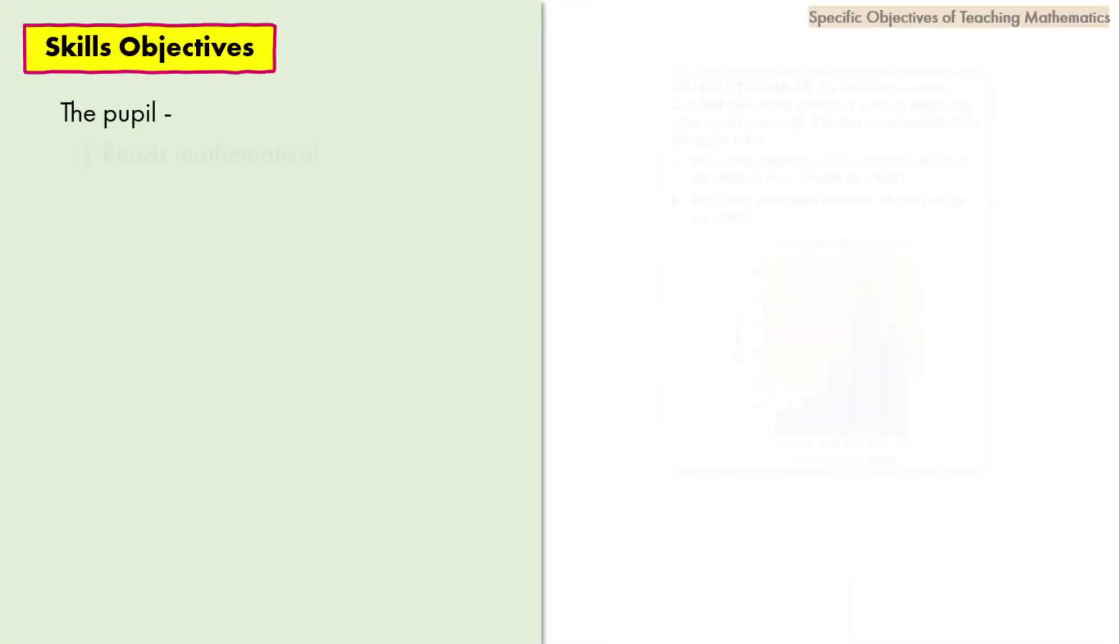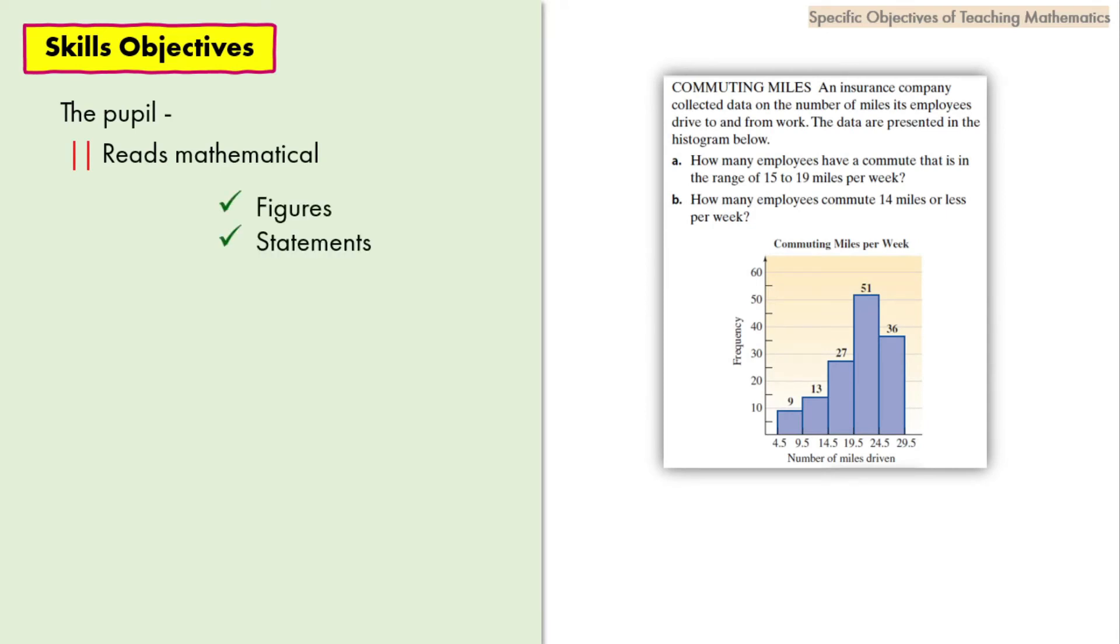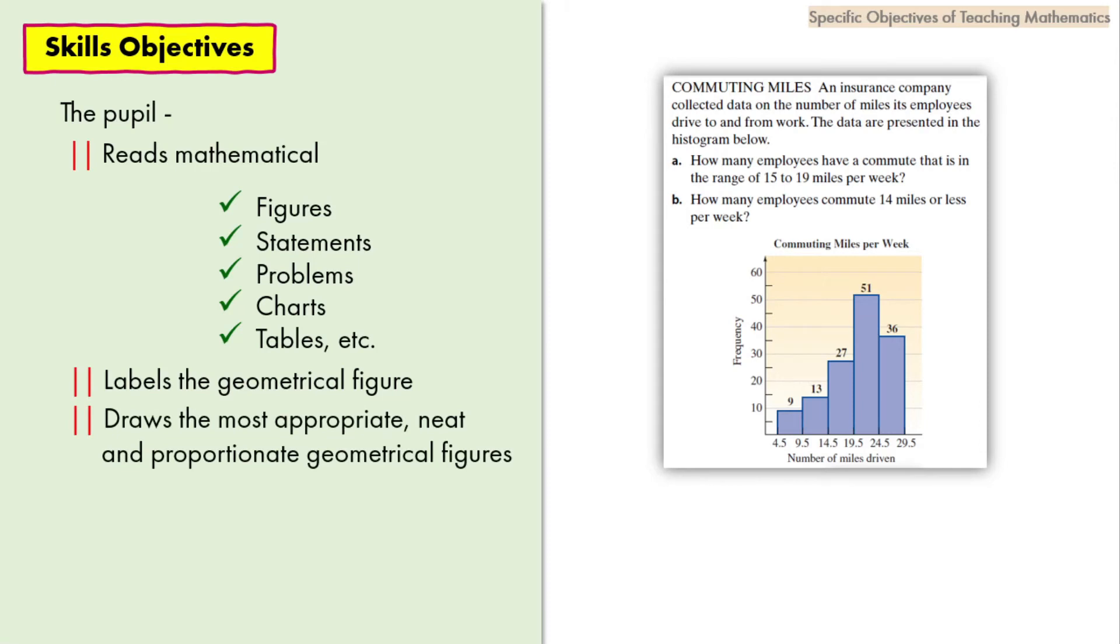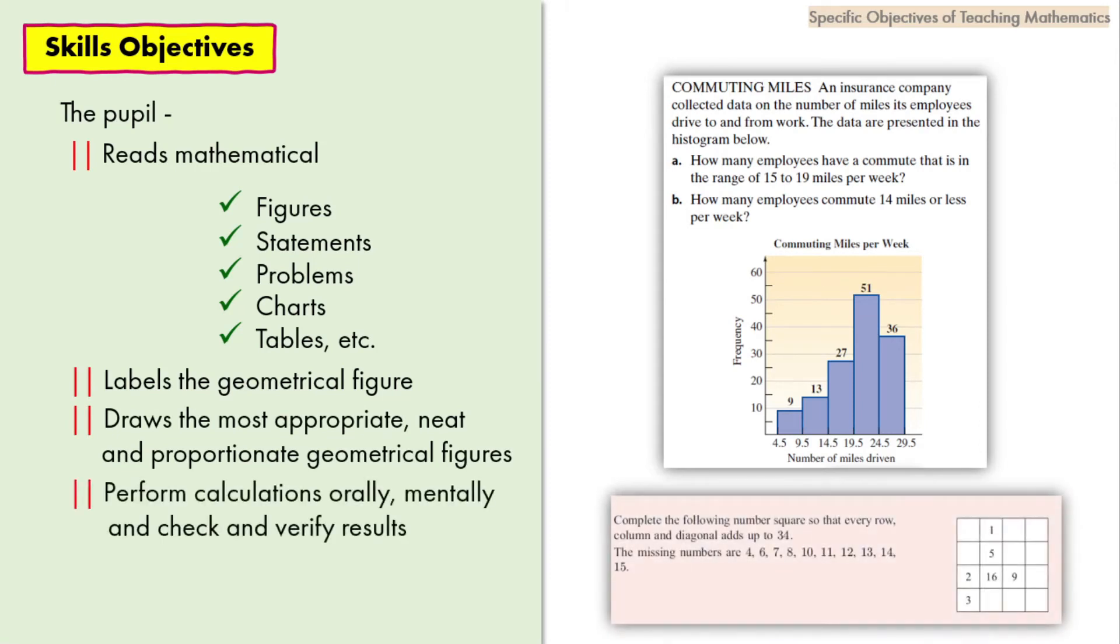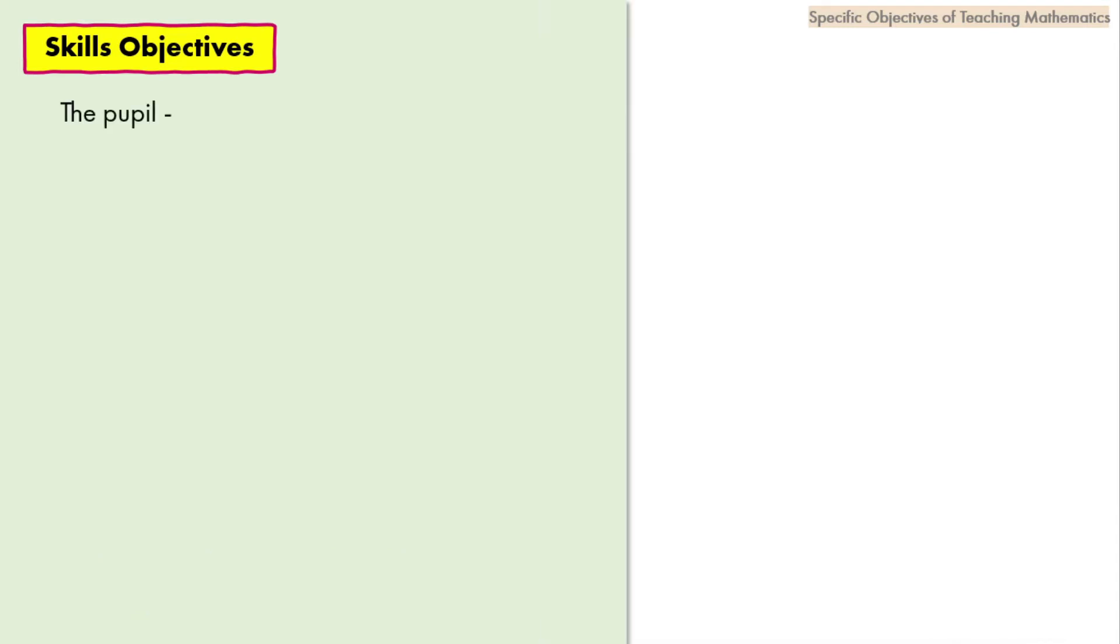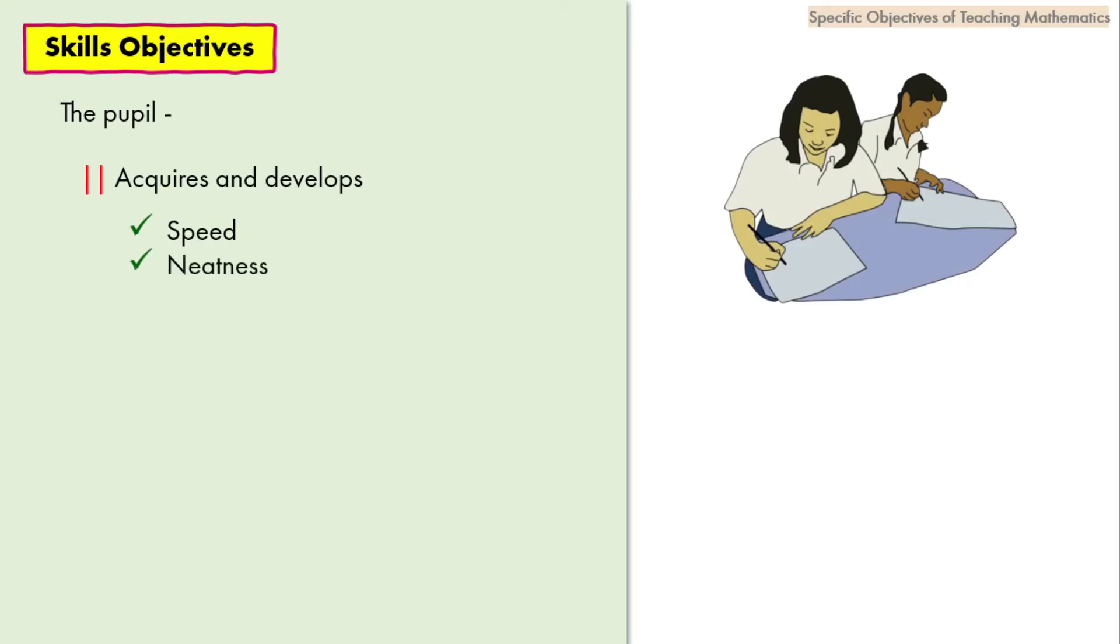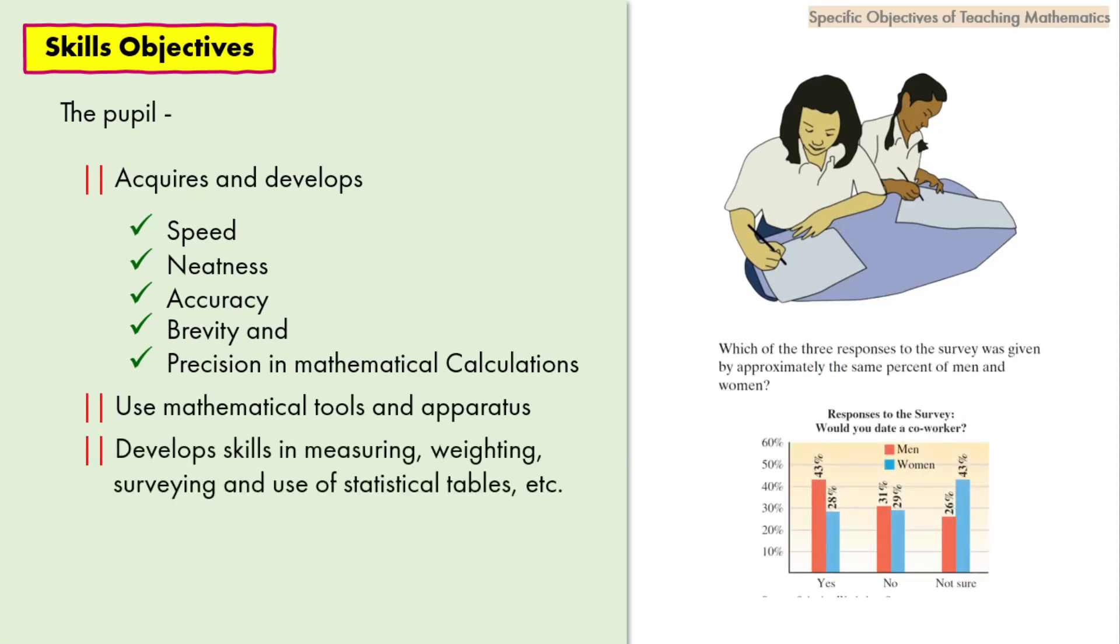Skills objectives: Here the pupil will be able to read mathematical figures, statements, problems, charts, tables, etc. They can label the geometrical figures, draw the most appropriate, neat, and proportionate geometrical figures, perform calculations orally, mentally, and check and verify results, solve oral and written problems quickly and accurately. The pupil will be able to acquire and develop speed, neatness, accuracy, brevity, and precision in mathematical calculations. The students will be able to use mathematical tools and apparatus, develop skills in measuring, weighing, surveying, and use of statistical tables.